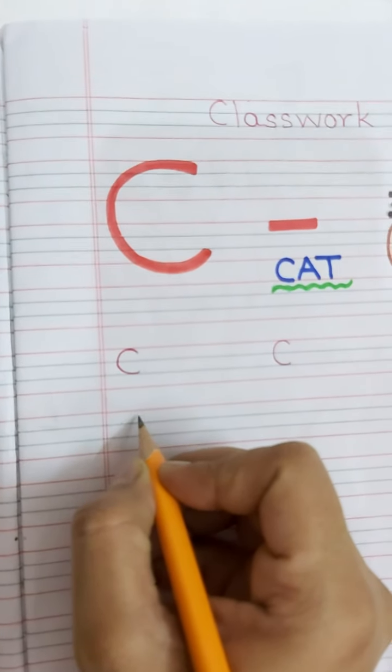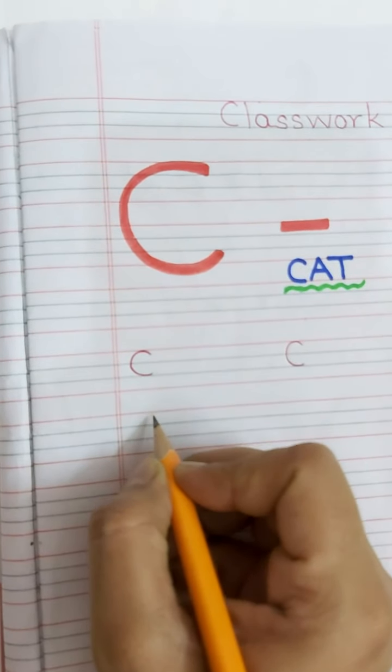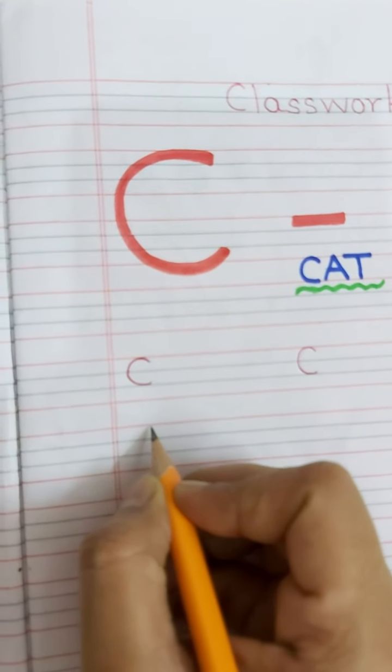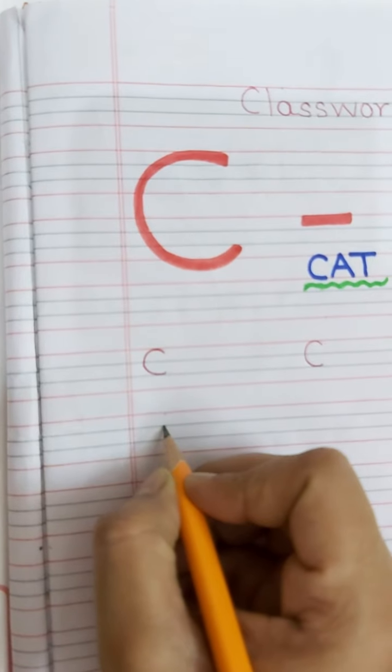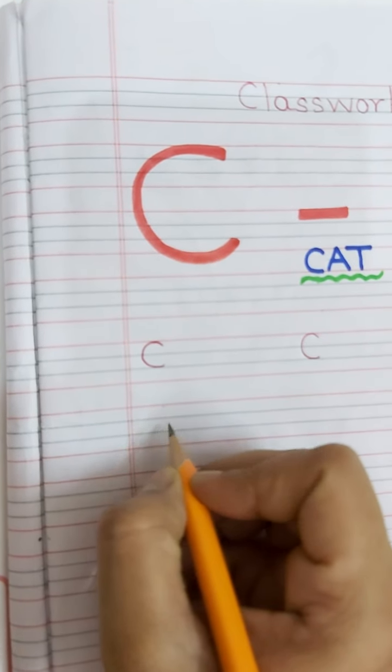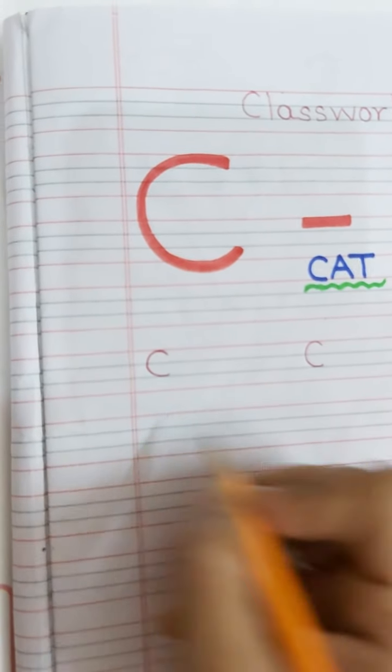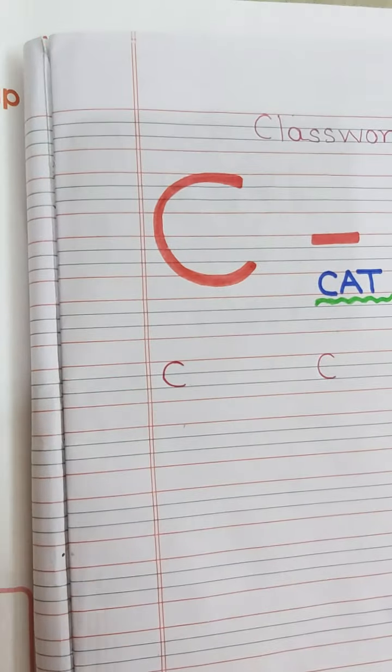Now, my dear children, my dear beeta, look here. Aapko beta C kitnay line mein banana hai? In three lines. One, two, three. How many lines? One, two, three. Aapko beta C three line mein banana hai.